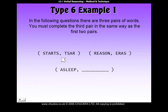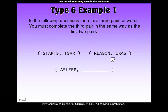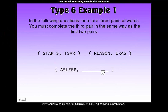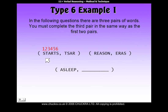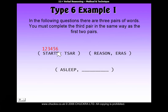You have to use the same rule in each pair. So the way you find 'tsar' must be the same way you find 'eras', and again with our answer. Let's start by numbering 'starts': position 1, 2, 3, 4, 5, and 6 within 'starts'.